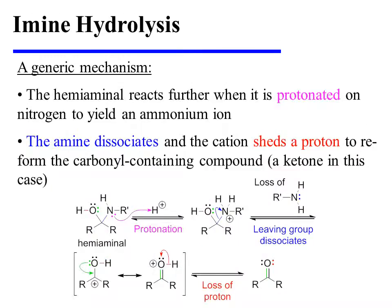The hemi-aminal is susceptible to further reaction. When it is protonated on nitrogen, an ammonium ion forms, and this good leaving group dissociates from the molecule, generating another resonance-stabilized cation. Loss of a proton regenerates the original carbonyl-containing compound, which in this case happened to be a ketone.